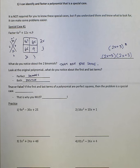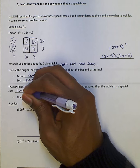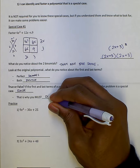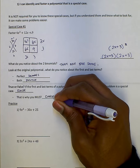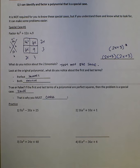So if the first and last term of a polynomial are perfect squares, the problem is a special case. It is false. That's why you must check your answer. Even though that will give you an indication that maybe this is a special case, it does not have to be a special case.